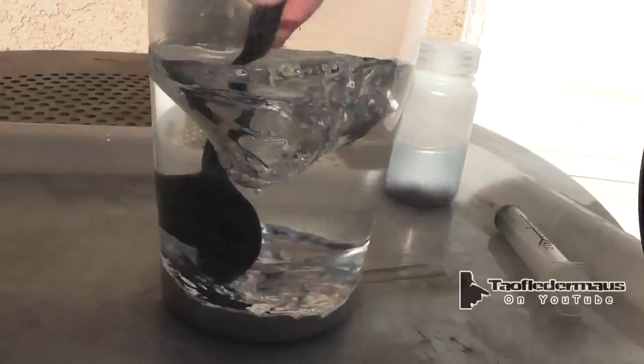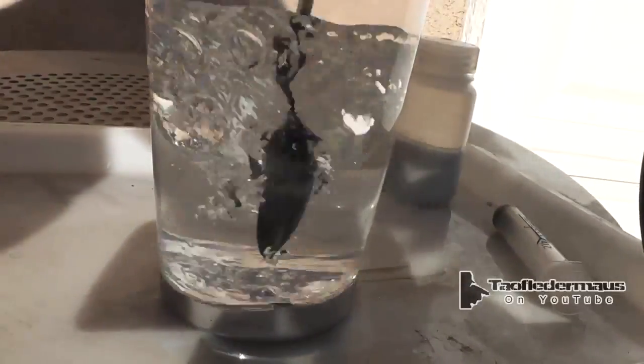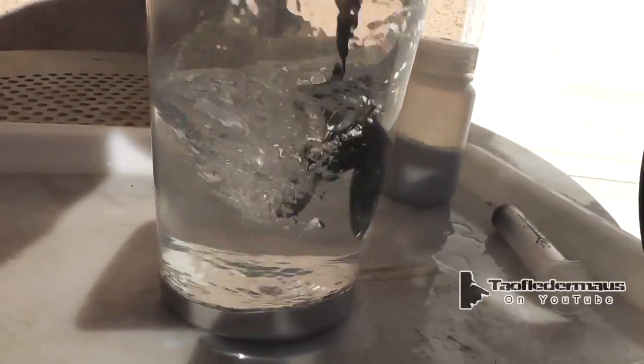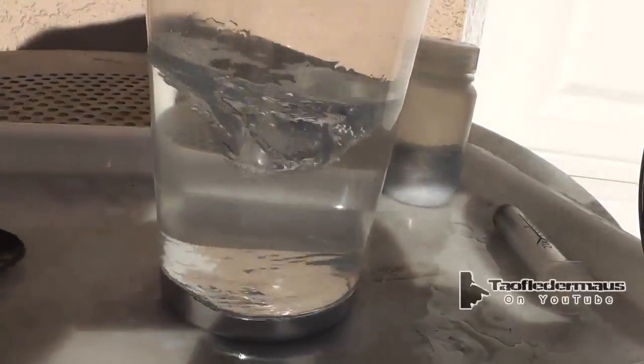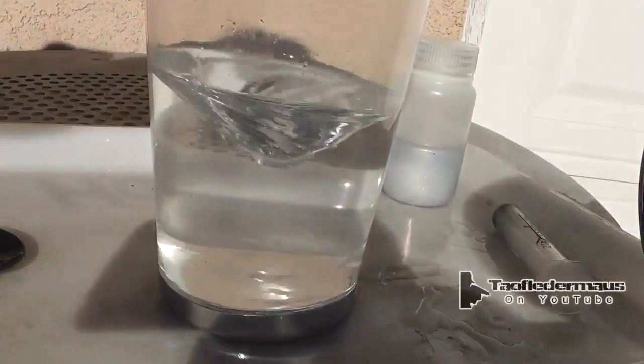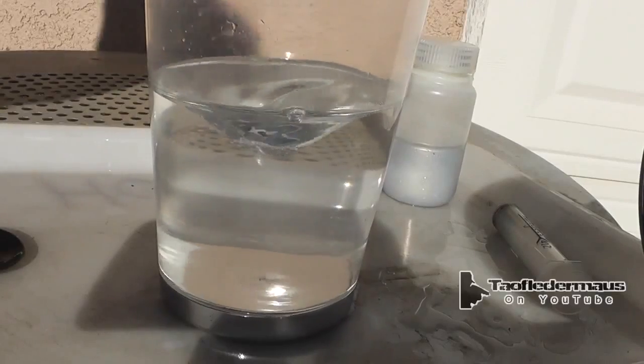Other people also wanted to see what mercury would look like in a blender. I don't have a blender that I want to contaminate with mercury. Also, I think the glass or whatever the container would be of the blender would be difficult to film through. So this is the next best thing.